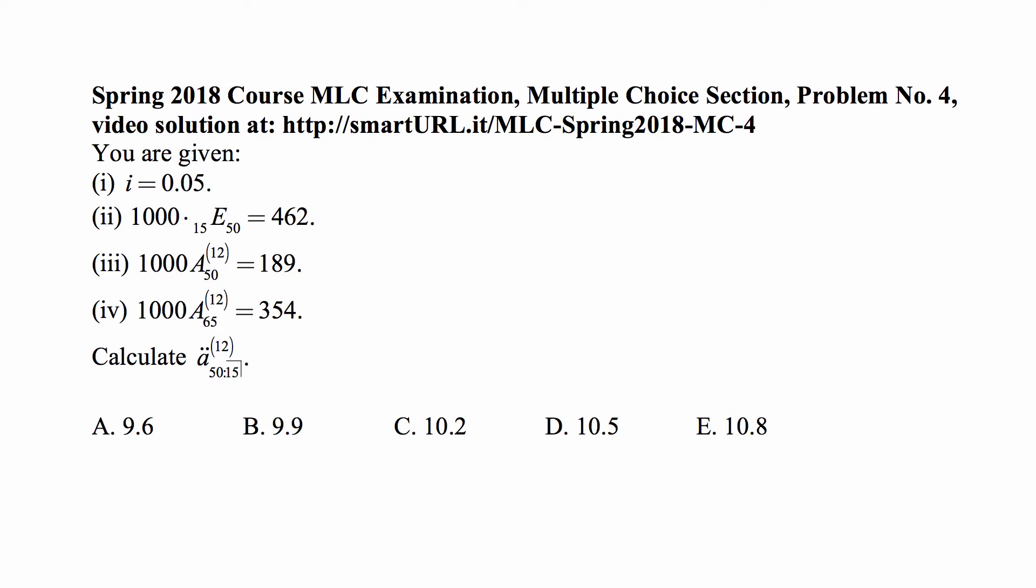You are given that the interest rate is 5%. That 1,000 times the cost of a pure endowment on a 50-year-old for 15 years is 462.